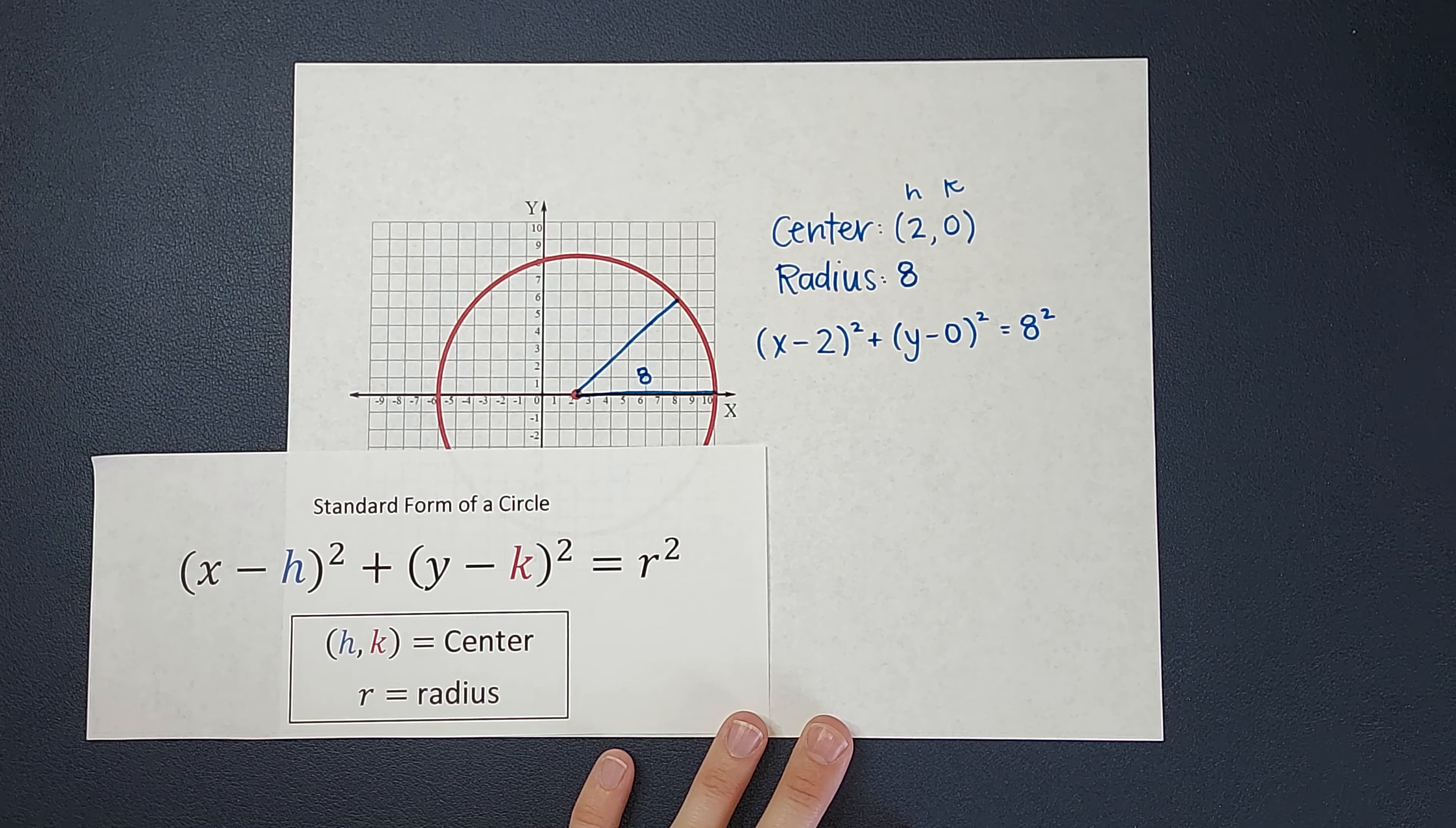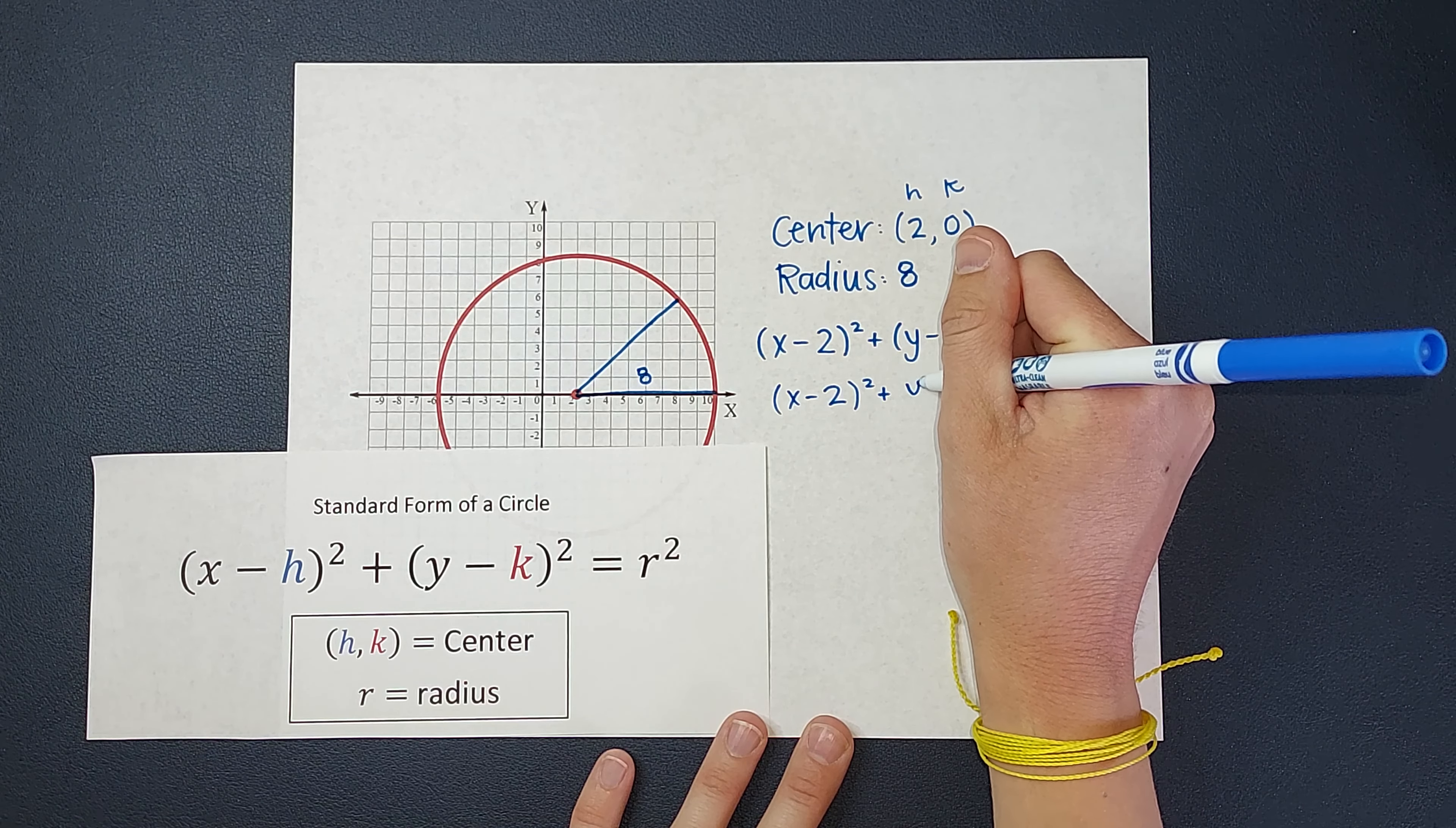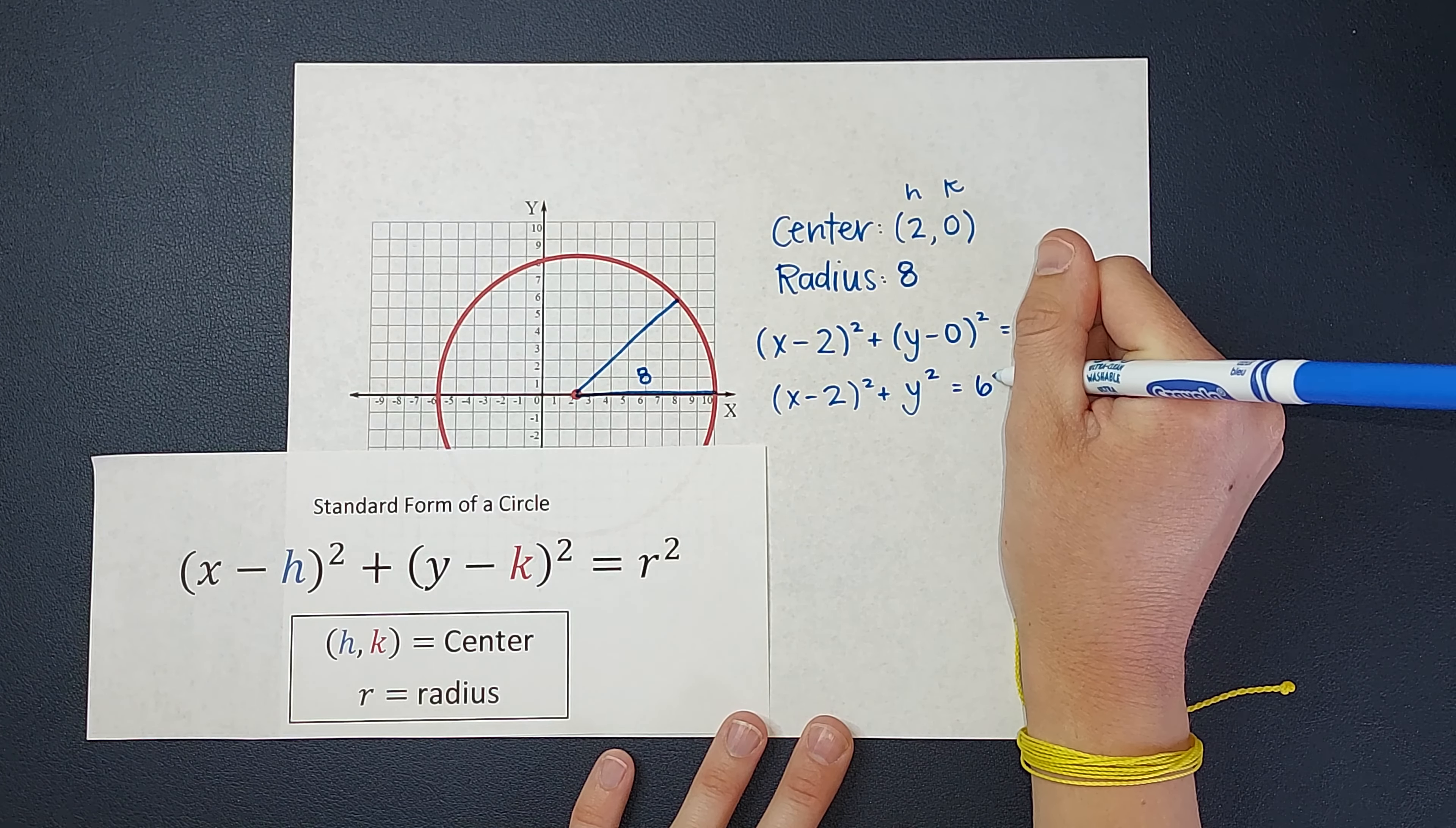Now let's just simplify this down a little bit. So I'm going to have x minus 2 squared, that's good, plus y minus 0 is just y. So I can just write this as y and we still need that squared. And then that's going to be equal to 8 squared, which gives me 64.